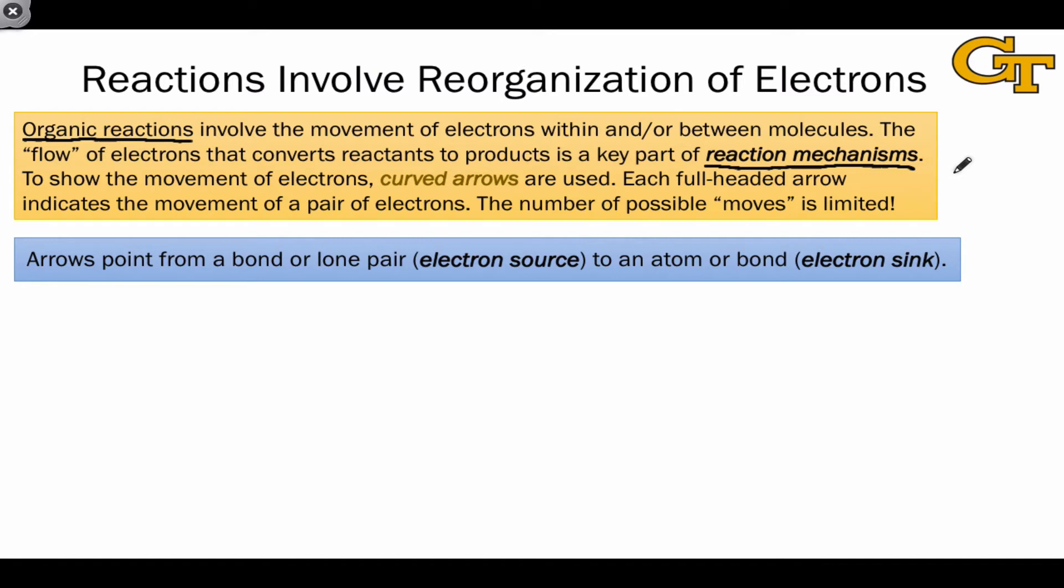The foundational idea of curved arrows, really, is that arrows point from a bond or lone pair, which we call an electron source, as it's the source of electrons where electrons are starting out, to an atom or bond where electrons land, which we call the electron sink.